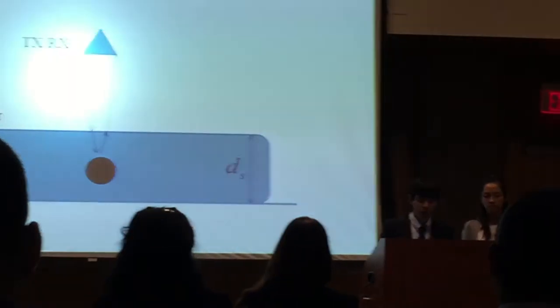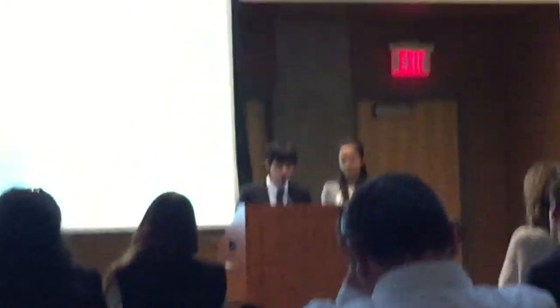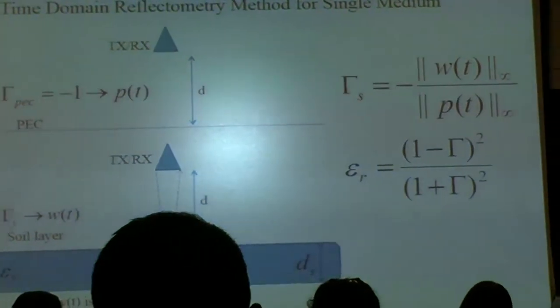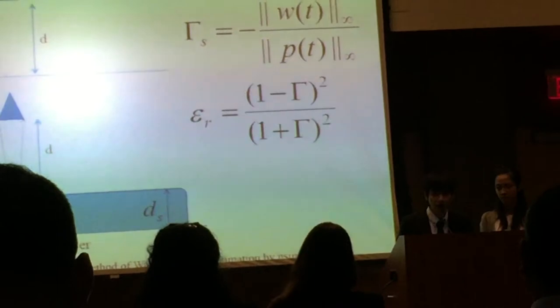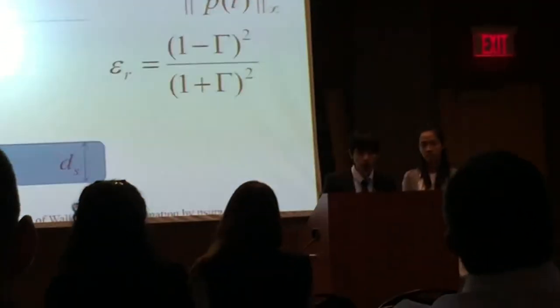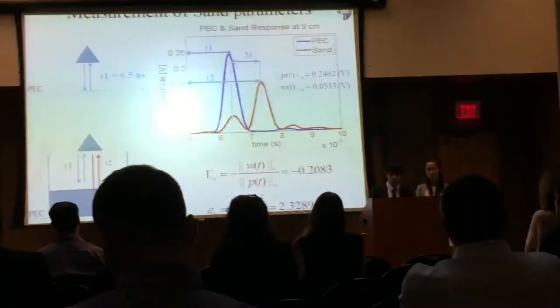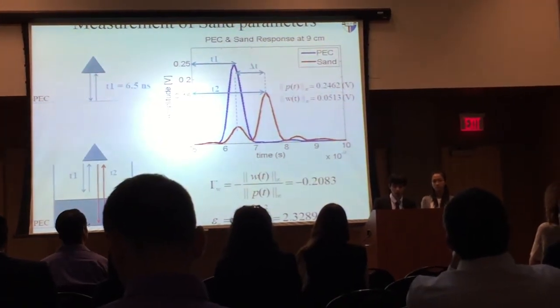The first problem we encountered is estimating the dielectric constant of the medium. This is very important because the dielectric constant affects the propagation path as well as the velocity of the signal inside the medium, and if we estimate this parameter accurately, we will get very accurate imaging results. One technique we are using to estimate the dielectric constant is called the Time-Domain Reflectometry method. The idea is to measure the reflection coefficient of the first interface of the sand layer, and from that we calculate the dielectric constant.